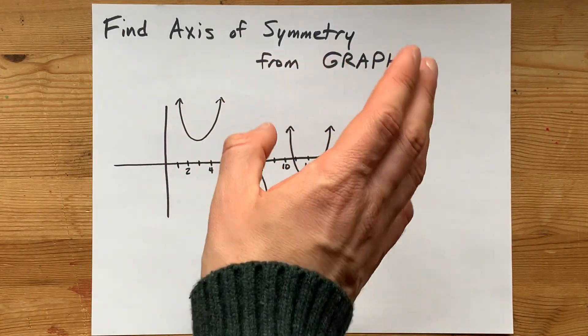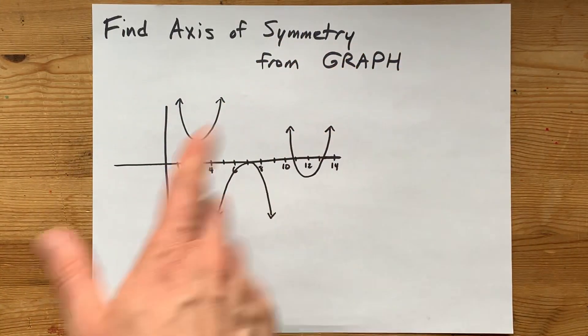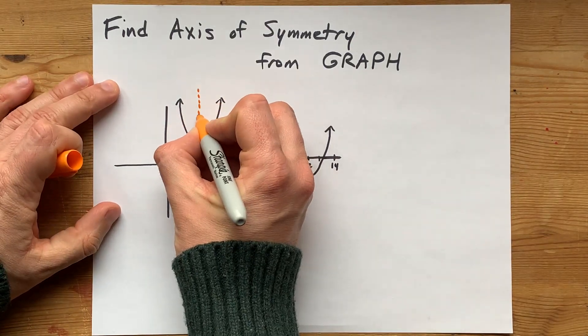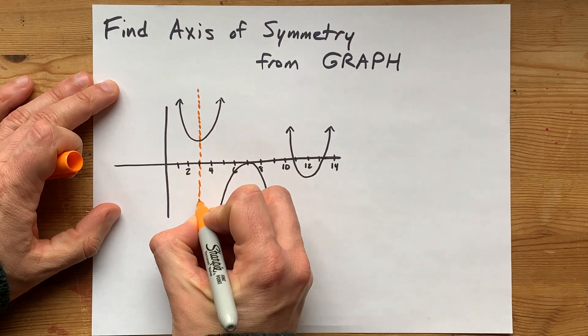How do you find the axis of symmetry of a parabola from the graph? I've got an easy method for you. I want you to find the line that cuts the parabola in half.